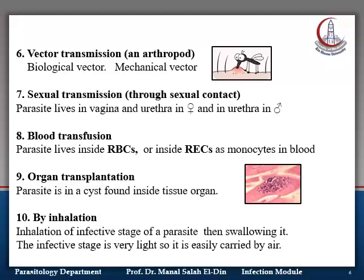Number seven is sexual transmission through sexual contact, where the parasite lives in the vagina and uterus in females or in the urethra in males. Number eight is through blood transfusion, where the parasite lives inside RBCs or inside reticuloendothelial cells such as monocytes in blood, and is transmitted during blood transfusion to another host, who then becomes infected.